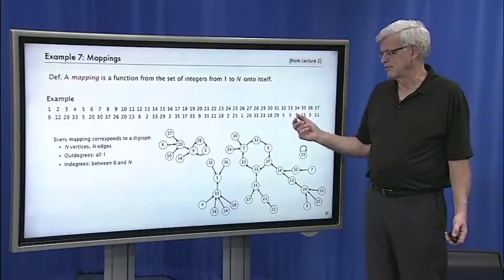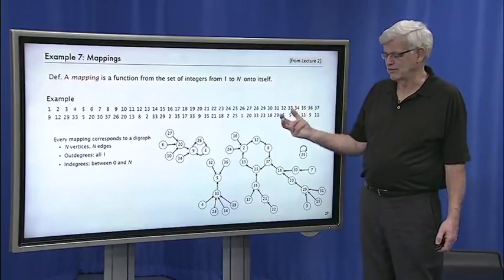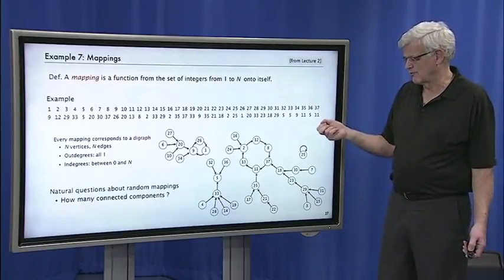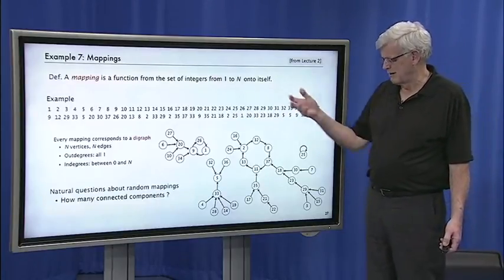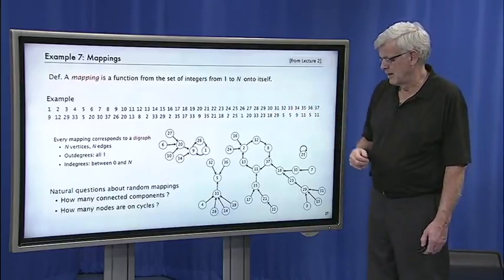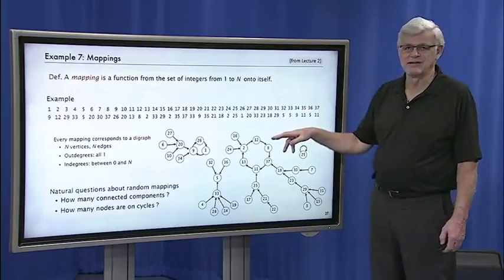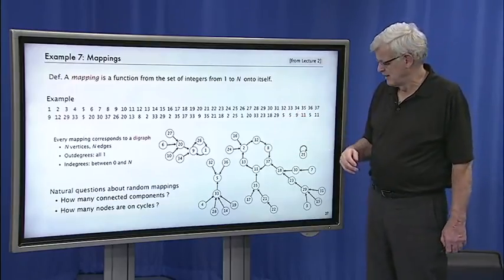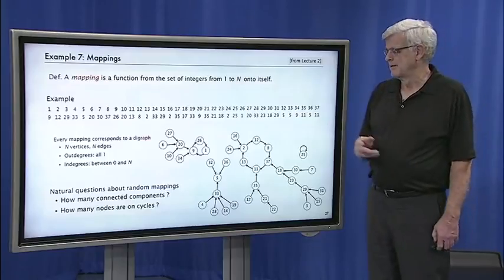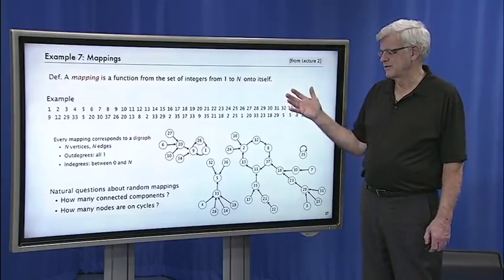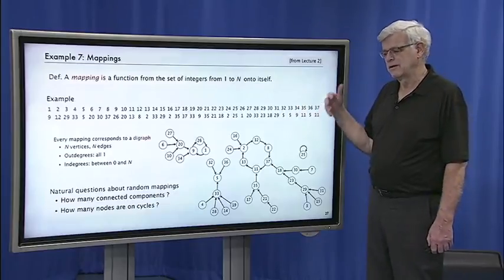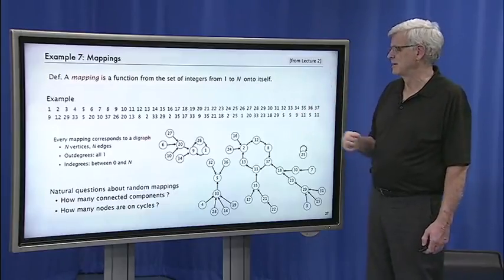And there's lots of applications where we're interested in studying properties of mappings. Natural questions that come up are: how many different components are there on average in a random mapping? How many of the nodes are on cycles and how many are on trees? And there's several other parameters that come up. And these are all handled in a fairly straightforward manner with the schemas that we've been considering.